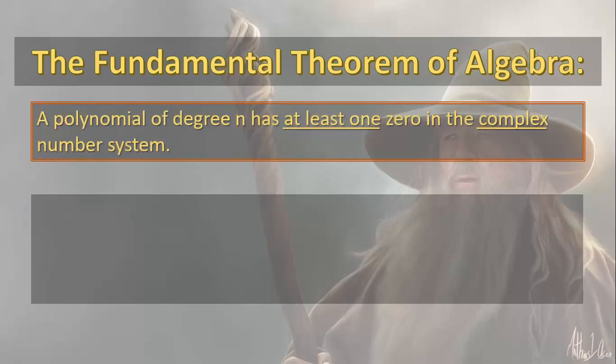So the fundamental theorem of algebra is this: a polynomial of degree n has at least one zero in the complex number system.